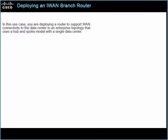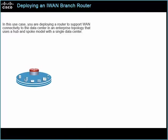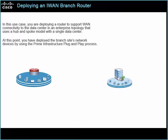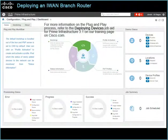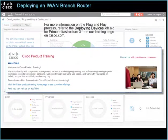In this use case, you are deploying a router to support WAN connectivity to the data center in an enterprise topology that uses a hub and spoke model with a single data center. You have deployed the branch sites network devices by using the Prime Infrastructure plug-and-play process. For more information on the plug-and-play process, refer to the Deploying Devices job aid for Prime Infrastructure 3.1 on our training page on Cisco.com.